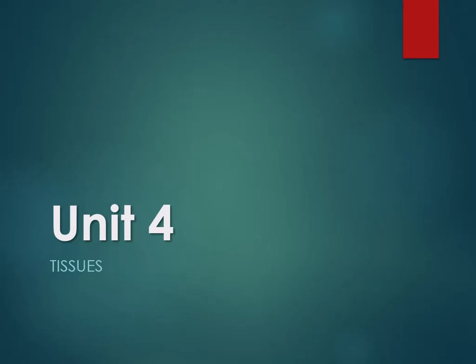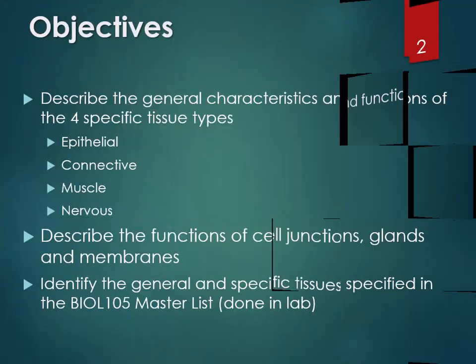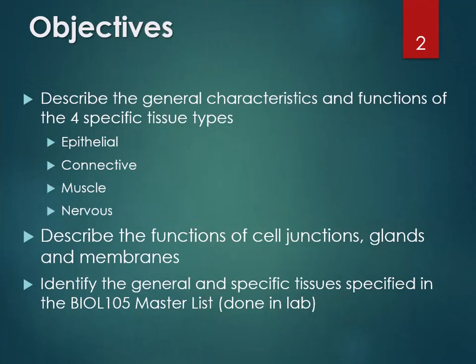This is Unit 4: Tissues. We are going to talk about the four types of tissues — epithelial, connective, muscle, and nervous — describe the function of cell junctions, glands, and membranes, and identify some of the tissues specified on your list.